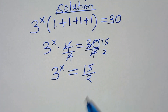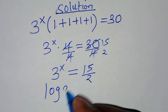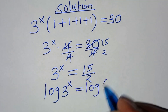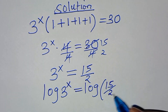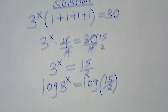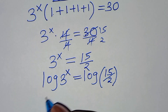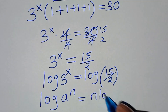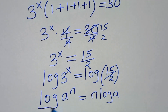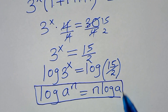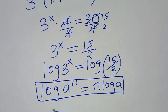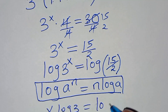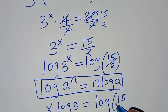To solve for the value of x here, we introduce logarithm on both sides, so that here we have log 3 to the power x, this is equal to log of 15 over 2. The next step: log 3 to the power x is in the form of log a to the power n, which we can express as n times log a. So applying this power log property, log 3 to the power x becomes x times log 3, and this is equal to log of 15 divided by 2.